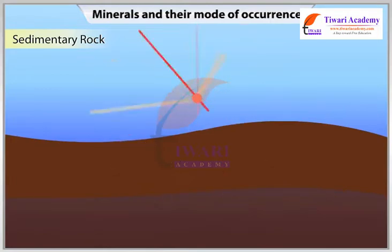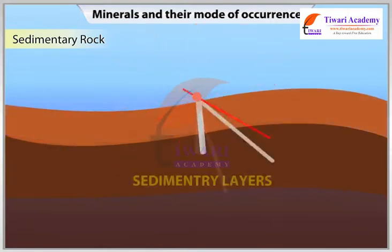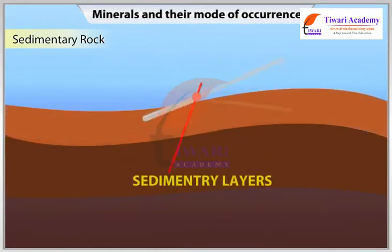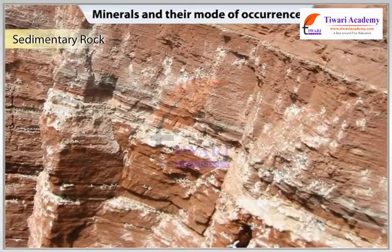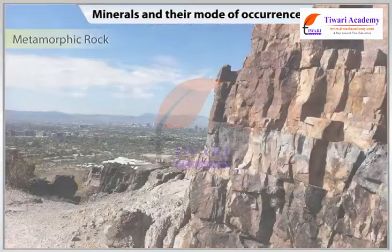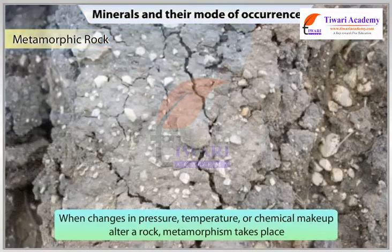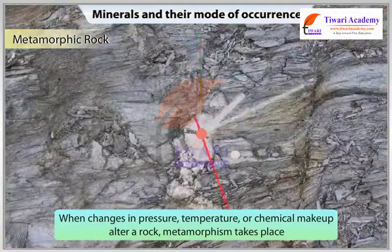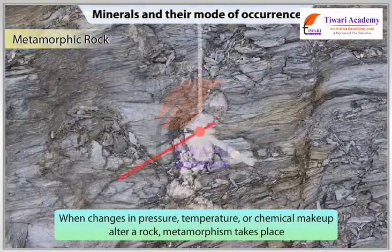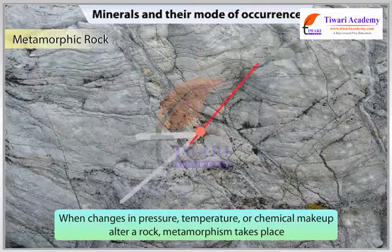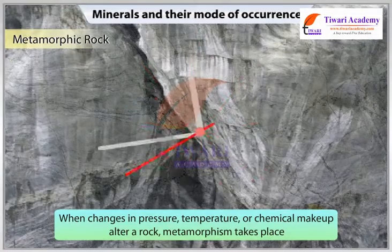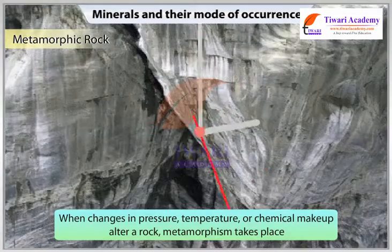This process of layers settling to the bottom happens over thousands and thousands of years. Metamorphic rocks: when changes in pressure, temperature or chemical makeup alter a rock, metamorphism takes place.